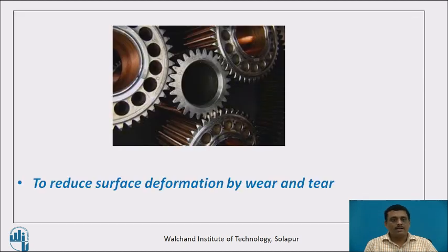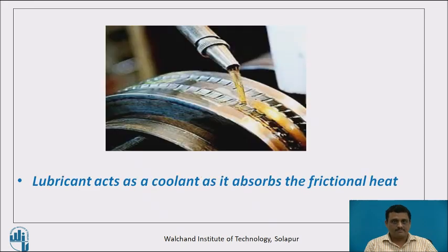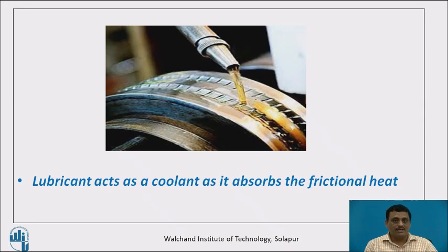The first function is that lubricant is used to reduce surface deformation by wear and tear. Machine part surfaces are very close to each other, and normally because of friction there are dimensional changes. One of the important functions of lubricant is to avoid these dimensional changes. Lubricant is also used to absorb the frictional heat, because when two surfaces slide or rotate against each other, friction generates frictional heat.